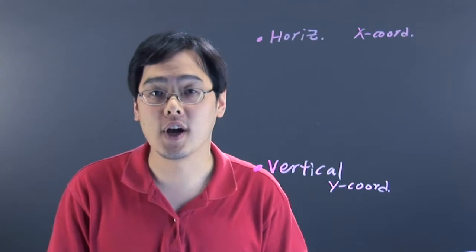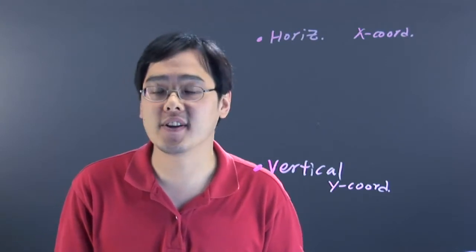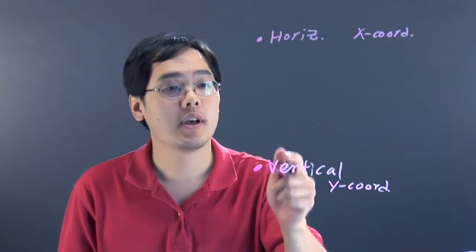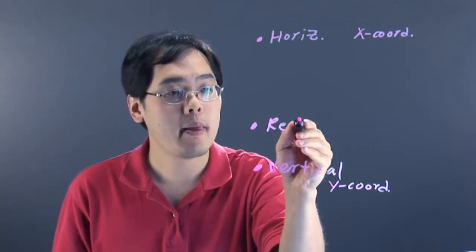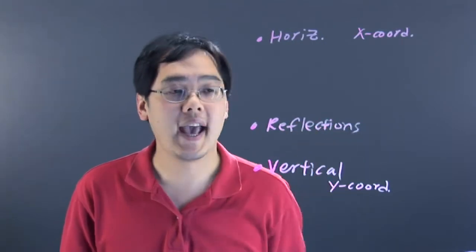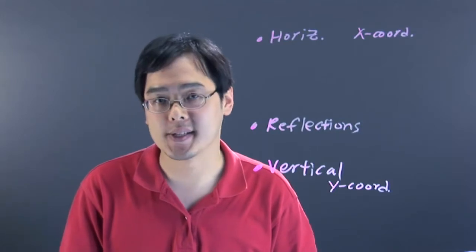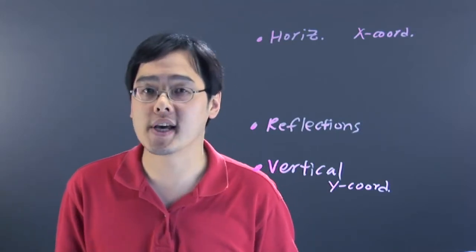As you'll discover later, the x coordinates actually work a little differently than you might expect. You also have what's called reflections. You can have reflections about the x-axis or the y-axis, and when that happens, you either have a vertical reflection or horizontal reflection.